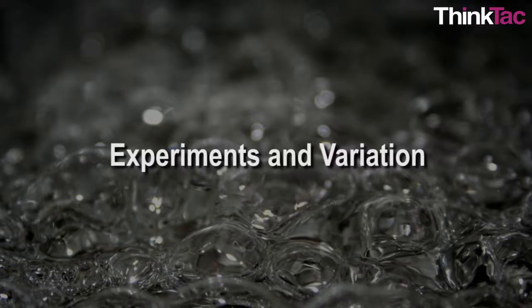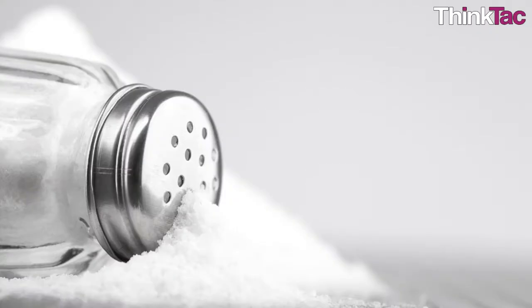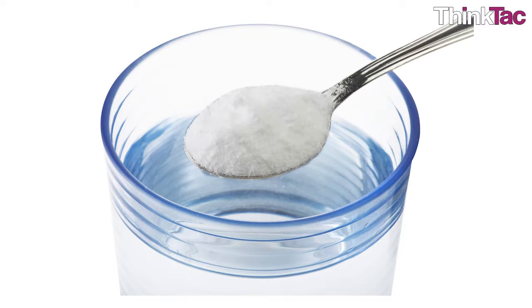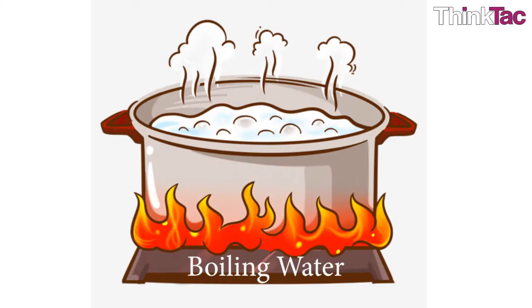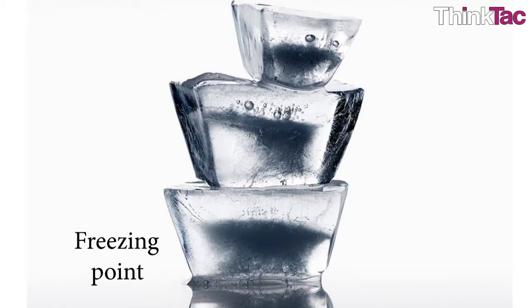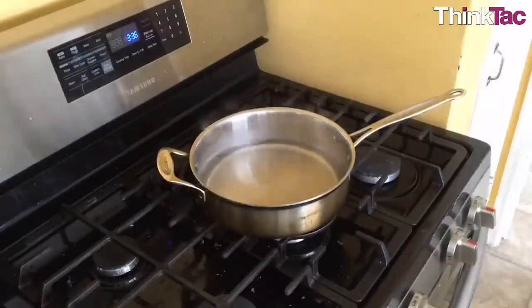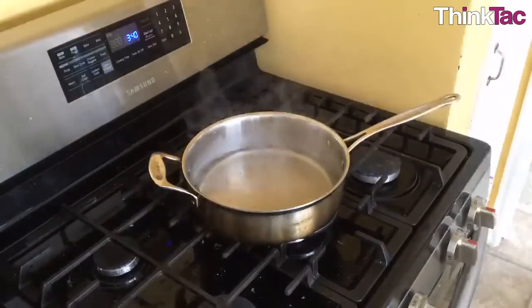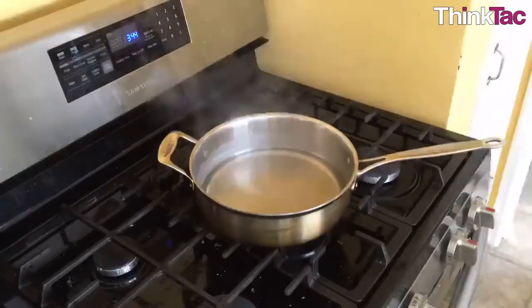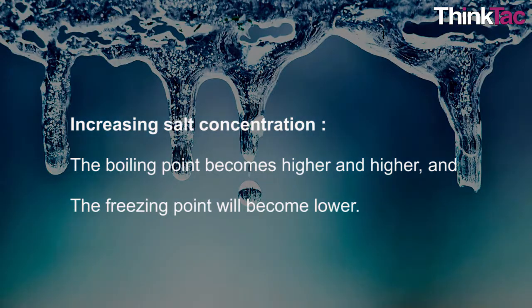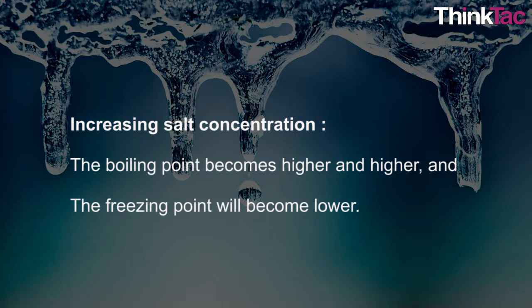One variation one can try with this activity is to take a gradient of salt concentrations and perform the experiment taking these different samples together to compare how the melting point, boiling point, and freezing points will change with decrease or increase of salt concentration. Predicting from the principles of depression of freezing point and elevation of boiling point, we may find that on increasing salt concentration, the boiling point becomes higher and higher and the freezing point will become lower.